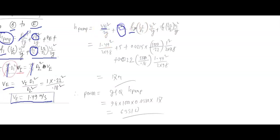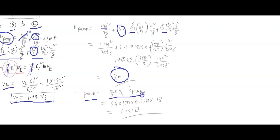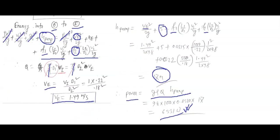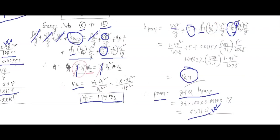Substituting all known values — z_E (elevation), f₁, L₁, D₁, V_I, f₂, L₂, D₂, V_E — into the energy equation, we get the pump head H_pump = 17 meters. Then the pump power = ρ·g·Q·H_pump. The key challenge in this problem was calculating the two friction factors f₁ and f₂; once those are known, the energy equations and power formula are straightforward.